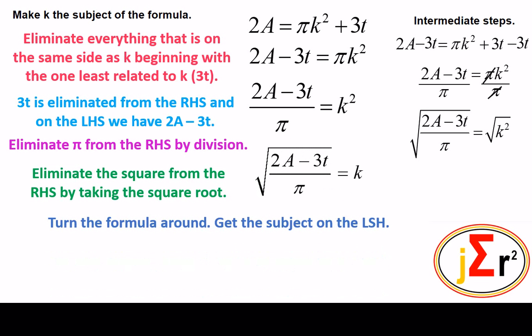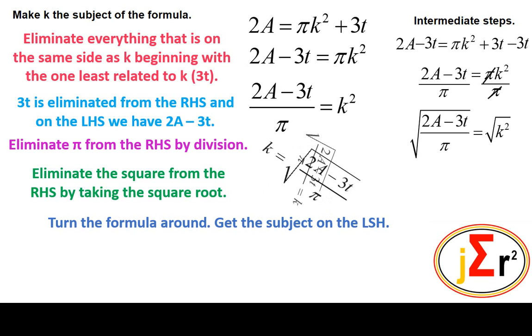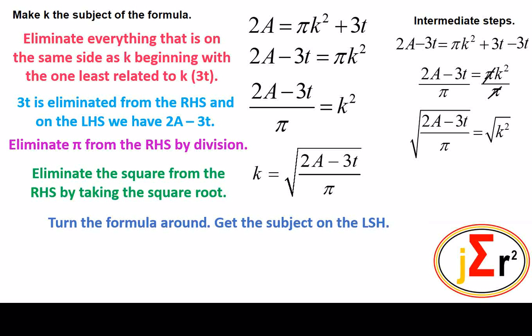k is not yet the subject of the formula, although we have singled it out. It is simple to make it the subject from here — all we need to do is turn the equation around so the proposed subject is on the left hand side. There we have it: k = √((2a − 3t) / π).